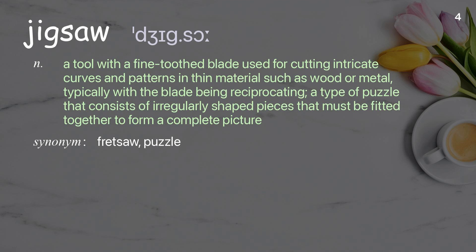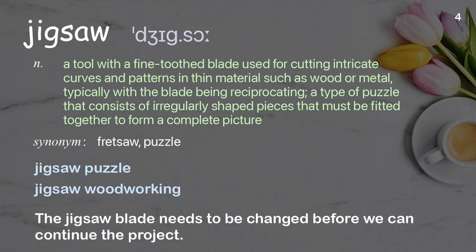Jigsaw: A tool with a fine-toothed blade used for cutting intricate curves and patterns in thin material, such as wood or metal, typically with the blade being reciprocating. Also, a type of puzzle that consists of irregularly shaped pieces that must be fitted together to form a complete picture. Examples: jigsaw puzzle, jigsaw woodworking. The jigsaw blade needs to be changed before we can continue the project.